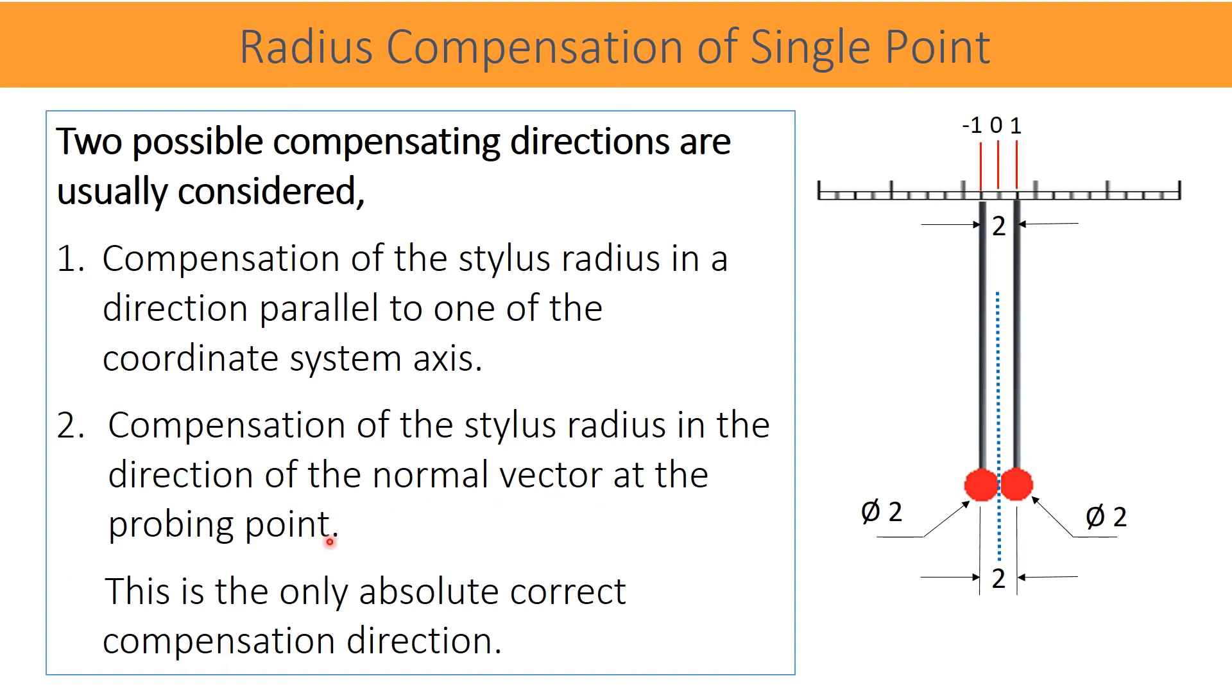Second is compensation of the stylus in the direction of the normal vector at the probing point. Every feature has got its location and direction. X, Y, Z are normally the location coordinates and I, J, K are the vector directions. This is the only absolute correct compensation direction. That is, when the direction vector is known, compensation in that direction is very easy.